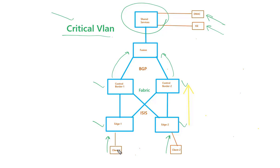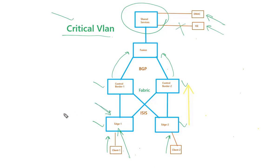In this lab we'll go through testing the feature. First, we'll authenticate users while the RADIUS server is up, then we'll break the connection between ISE and the SD-Access fabric to test the Critical VLAN feature.